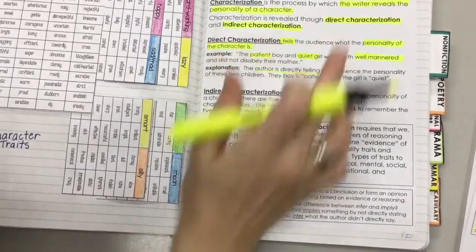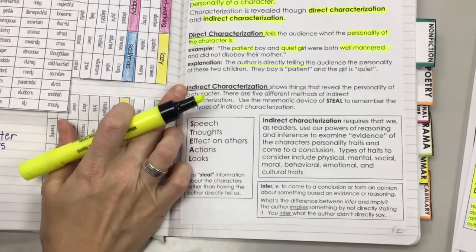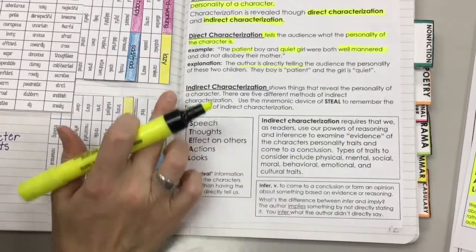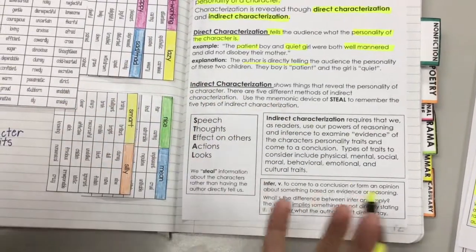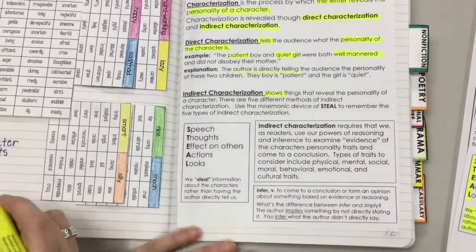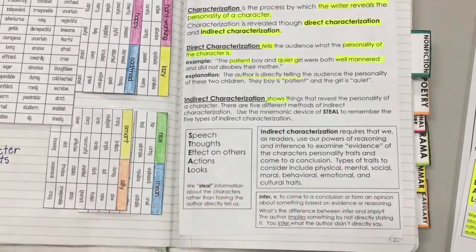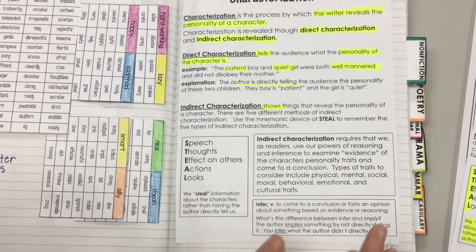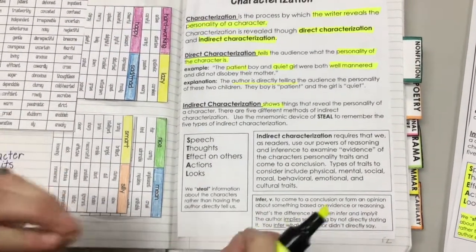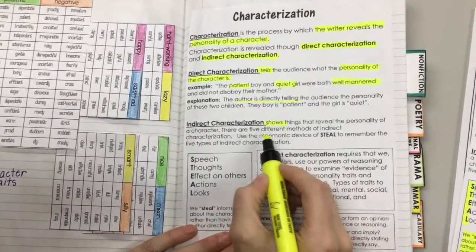The opposite of direct is indirect. The prefix 'in' means not, so indirect literally means not direct — the opposite of direct. The key word here is shows. So the author is not going to come right out and tell you. It is not going to be super obvious. You, the reader, have to look at the hints and the clues to figure it out.